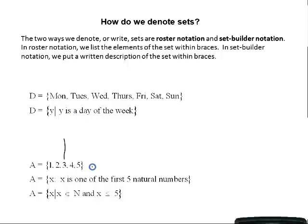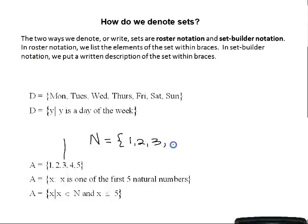Let's look at another set. Set A is {1, 2, 3, 4, 5} — those are the first five counting or natural numbers. Your natural or counting numbers are the numbers a child first learns to count; they start with 1, 2, 3 and the pattern continues. Any time you see capital N, we're talking about natural numbers. We listed the elements — this is roster notation.